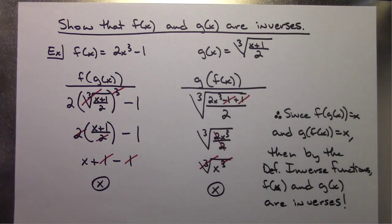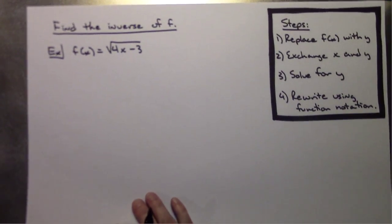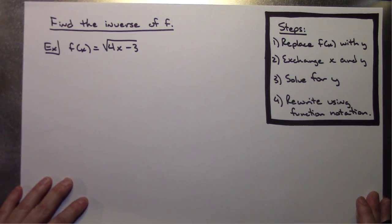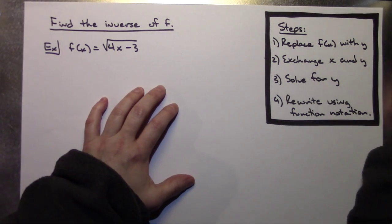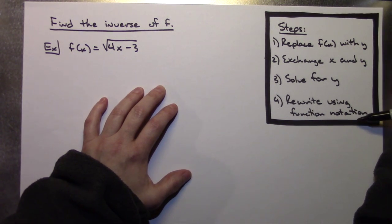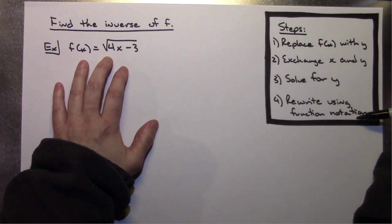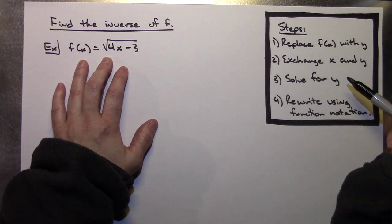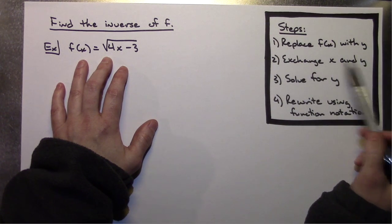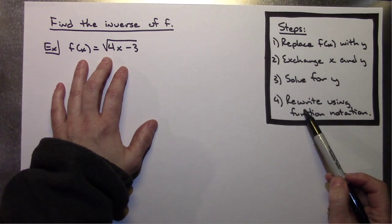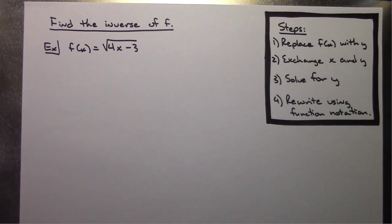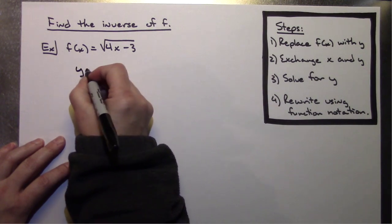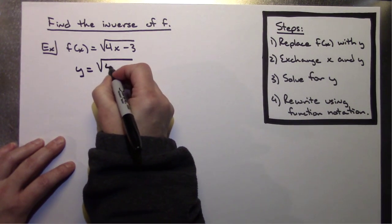For the second example, suppose you're asked to actually find the inverse function of a given function. Here are the steps: first, replace F of X with Y; second, exchange X and Y; third, solve for Y; and fourth, rewrite using function notation. Applying step one, I replace F of X with Y, giving Y equals the square root of 4X minus 3.